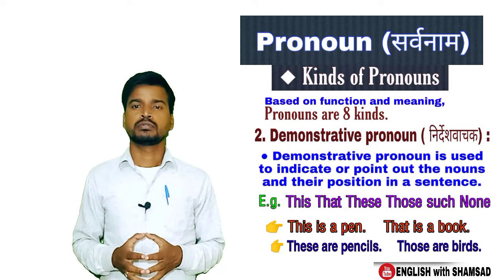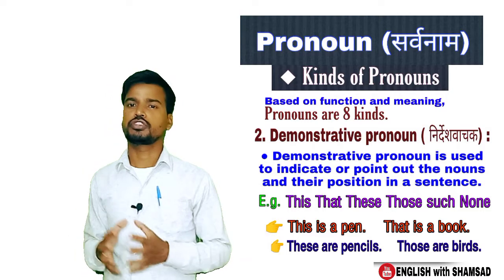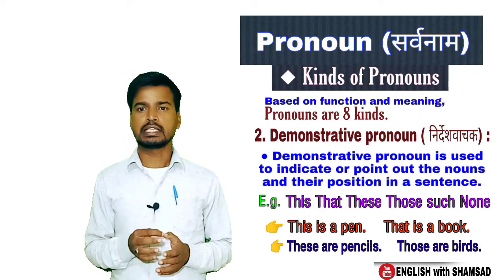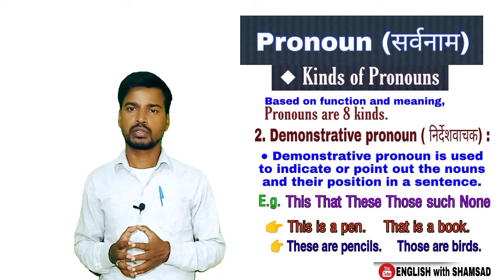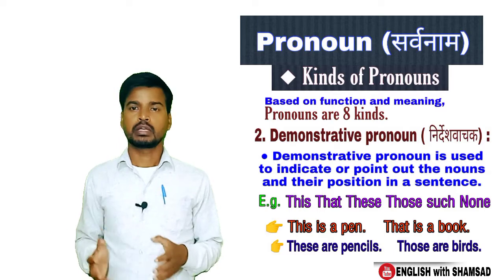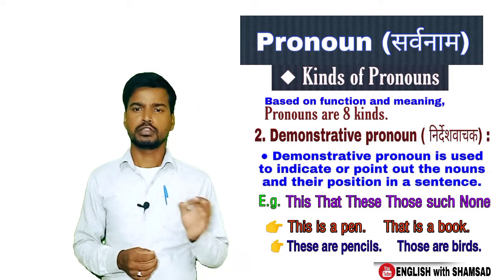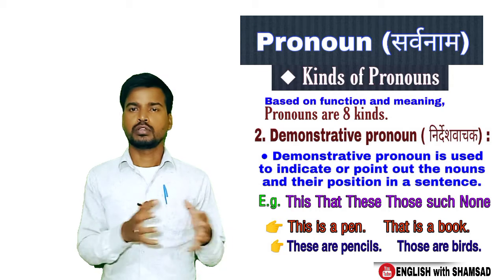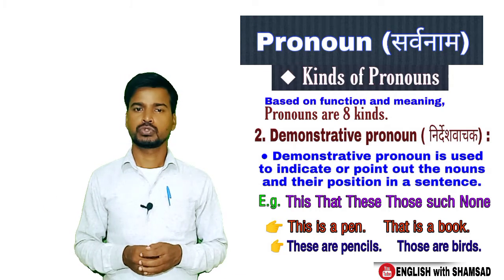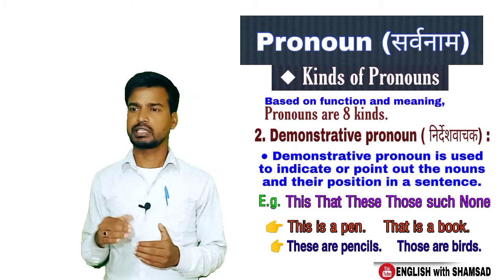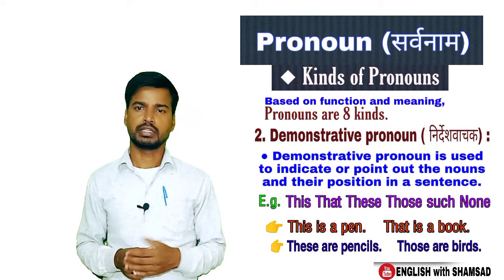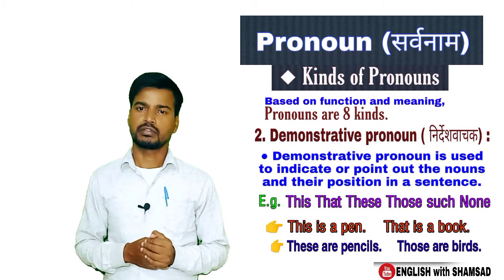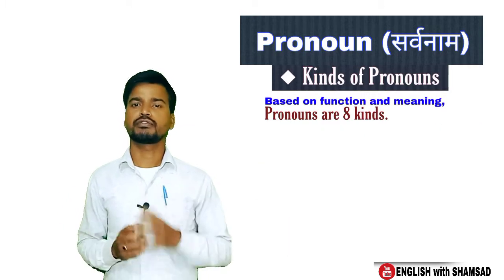The next kind of pronoun is demonstrative pronoun. Demonstrative pronoun is used to indicate or point out nouns and their position in a sentence. For example: this, that, these, those, such, etc. 'This is a pen', 'that is a book', 'these are pencils', 'those are books.' 'This' indicates nearby, 'that' indicates far away, and 'these' and 'those' are their plural forms.